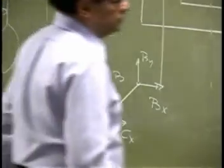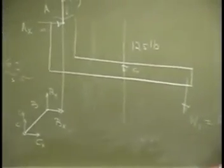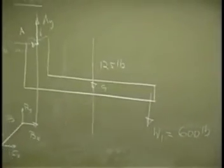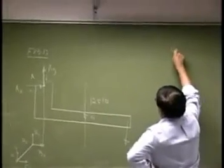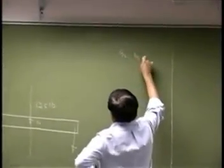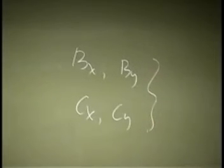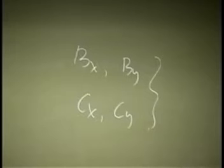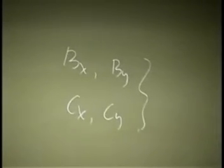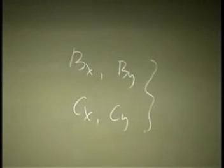So for the member BC, we end up with four unknown forces. You have a force Bx, By, and you have Cx and Cy. And that is just too many unknowns. If I take that member by itself and write the equations for equilibrium, you could write three equations.